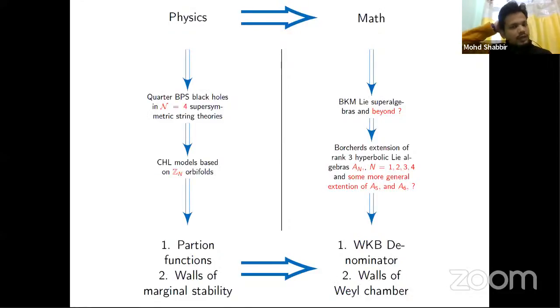Our work falls in the category where we suggest some new insights in math. In the following flowchart we can debrief a little bit here. For the physics side, we talk about quarter BPS black holes in string theory and string theory symmetry, where we're interested in the CHL models based on orbifolds. There are two ingredients: the partition function and walls of marginal stability.